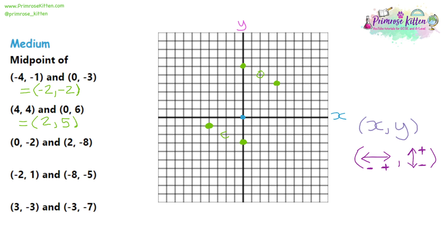Question 3: we start with (0, -2) — 0 across and 2 down — and then (2, -8) — 2 to the right and 8 downwards. Join them together and identify the central coordinate. To verify it's in the middle, check it's 4 to the left of the right coordinate and 4 to the right of the left coordinate, and equidistant vertically. From the centre it is 4 to the left, so the x-coordinate is negative 4. On the y-axis it's in line with the centre, so it's 0. The answer is (-4, 0).